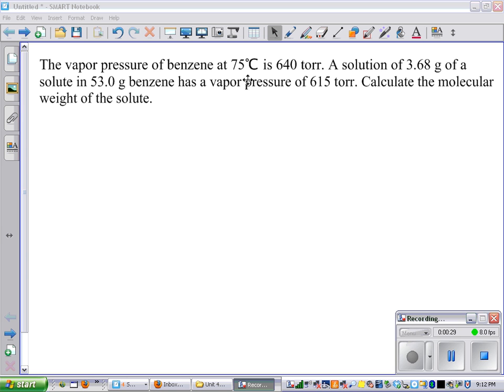At a constant temperature of 75 degrees, the lowering of the vapor pressure of a non-volatile solute, which we don't know the identity of but we're going to figure that out by finding its molecular weight, is proportional to the concentration of the solute in solution.